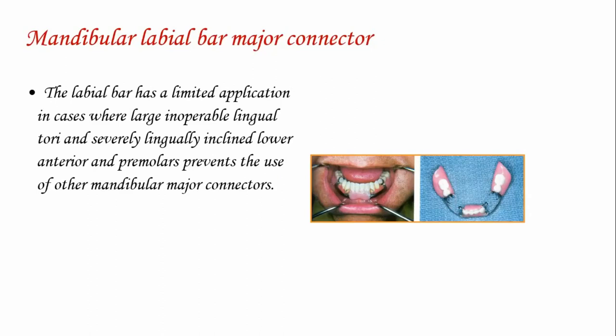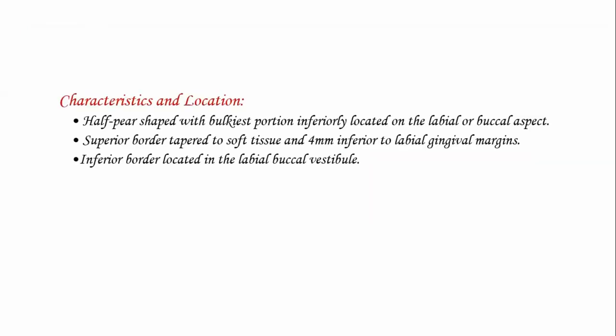The mandibular labial bar has limited application; it is used mainly where inoperable lingual tori and severely lingually inclined lower anteriors and premolars prevent the use of all other major connectors. It is a labial bar on the facial aspect of the mandibular arch, half pear shaped in cross section. The labial bar is longer than the corresponding lingual bar, double lingual bar, or lingual plate. To ensure rigidity, the height and thickness of the labial bar must be made greater. Location: the bulkiest portion is inferiorly located on the labial aspect, superior border tapered to soft tissue and 4 mm inferior to labial gingival margins, with the inferior border located in the labial-buccal vestibule.